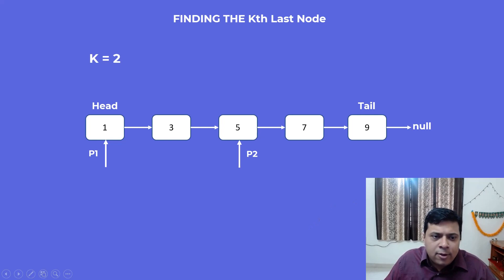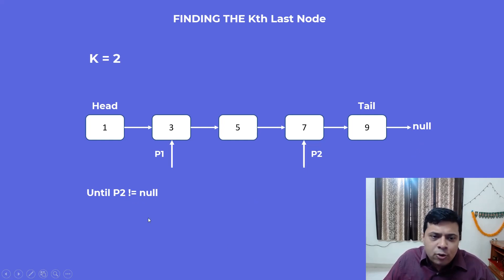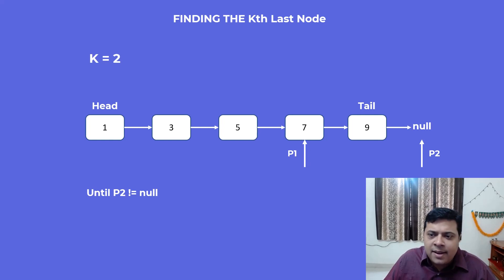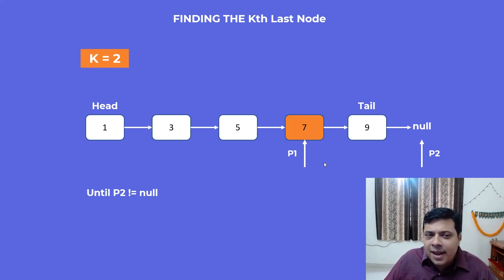Now that our pointers are in place, we start iterating through the list using both pointers. We move p1 to 3 and p2 to 7. The key condition is that we keep this traversal going until p2 reaches null. p2 is at node 7, which is not null, so we continue. Next iteration: p1 reaches 5 and p2 reaches 9, the tail — still not null, so we iterate again. Now p1 moves to 7 and p2 reaches null, meaning we've hit the end of the list. Our p1 is now at node 7 — the second last node. We've found it in a single pass.